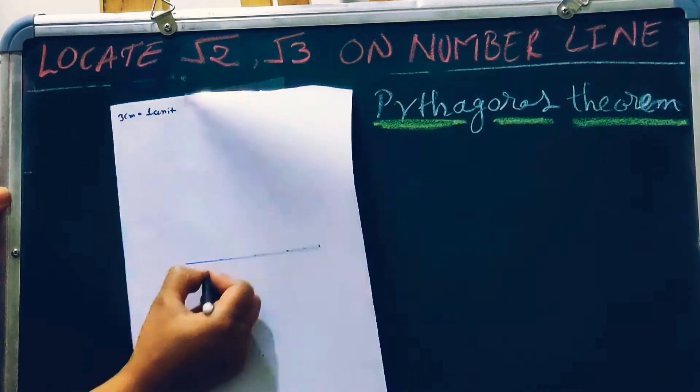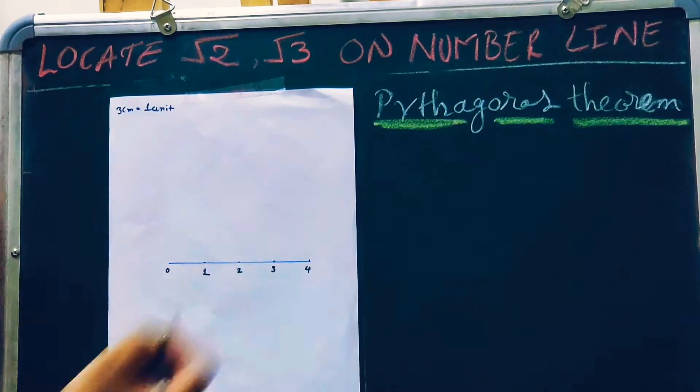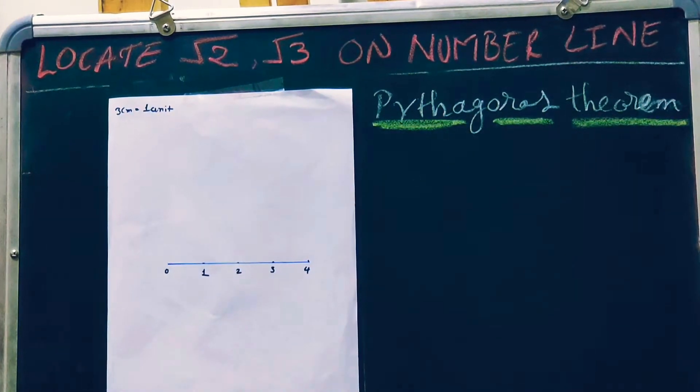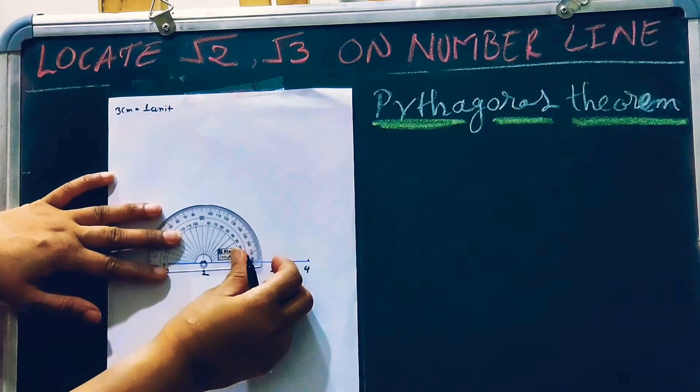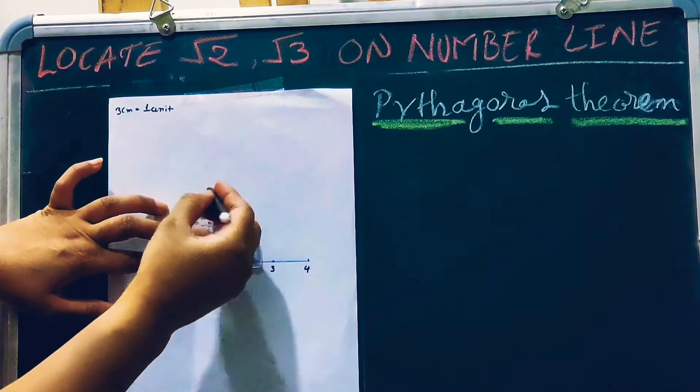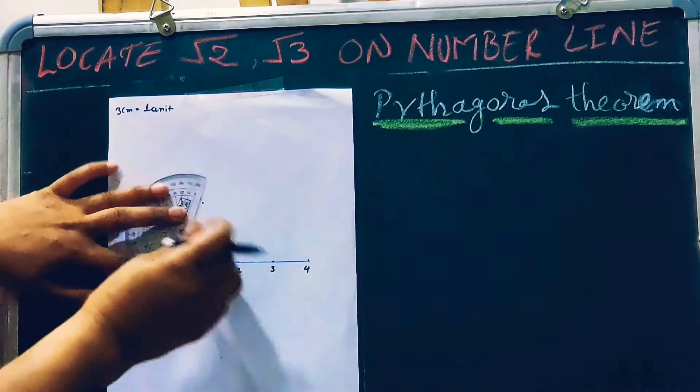Now mark 0, 1, 2, 3, and 4 here. Now make a perpendicular on point 1. Make a perpendicular line. You can use this tool for this.